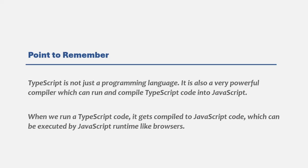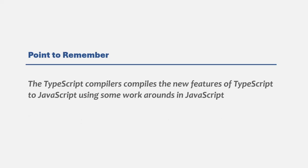That brings up another important question: how can TypeScript use new features not available in JavaScript and still give us regular JavaScript code? The TypeScript compiler compiles the new features of TypeScript to JavaScript using workarounds in JavaScript. For example, we can write some code in TypeScript using its new features in a nice and simple way, but when it gets compiled to JavaScript, that same nice and simple code will have complex JavaScript logic and syntax to achieve the same thing. TypeScript cannot output JavaScript features that JavaScript does not support — the new features are converted using existing JavaScript features. The TypeScript code is easy to write, but the equivalent JavaScript will be more complex.